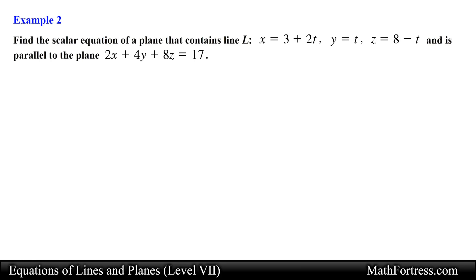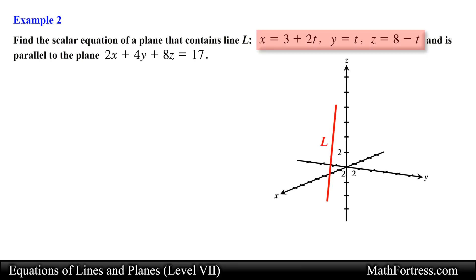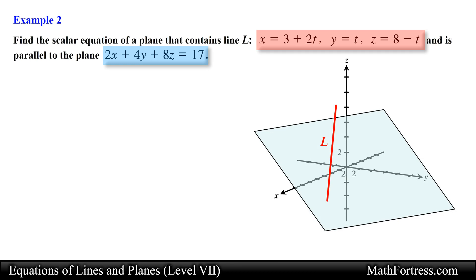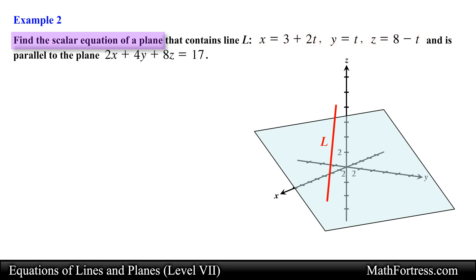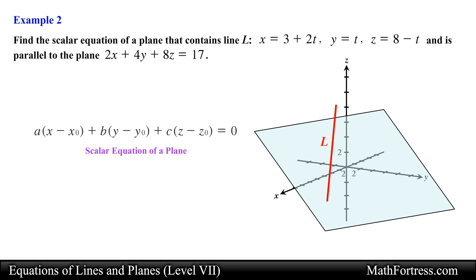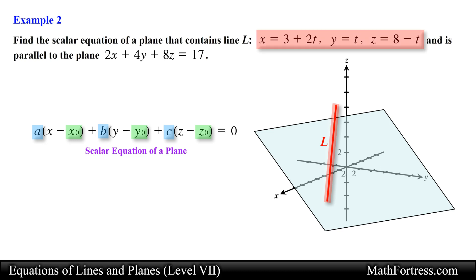Find the scalar equation of a plane that contains line L and is parallel to the plane. In this problem we are given the parametric equations of a line and the scalar equation of a plane. We are asked to determine the scalar equation of a plane that contains line L and is parallel to the plane. Similar to the previous example, we need a point on the plane and a vector normal to the plane. Since the plane contains this line, we can determine a point on the plane by using the parametric equations of line L.